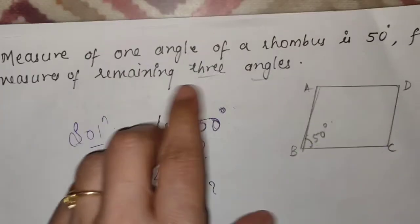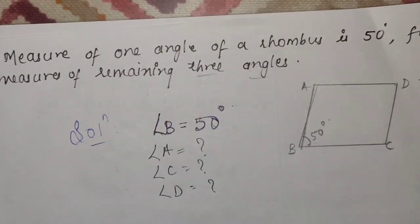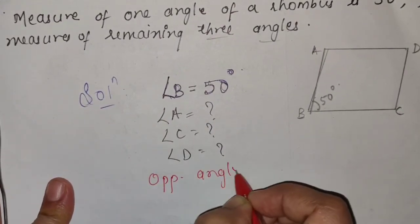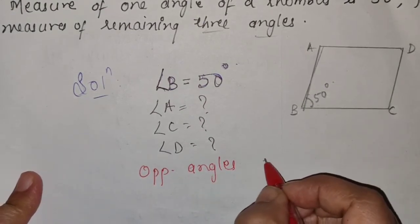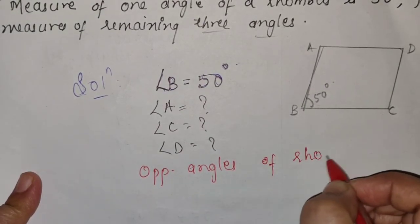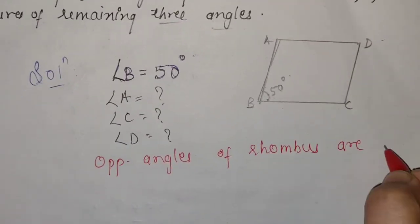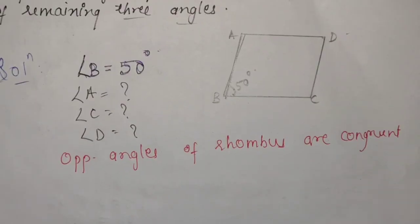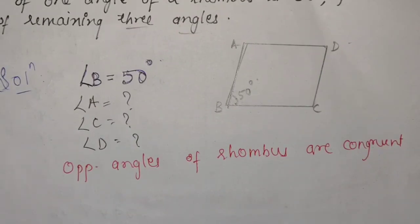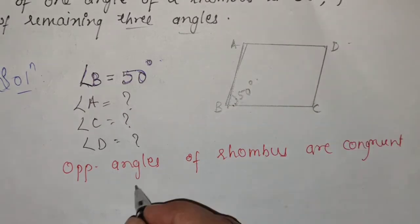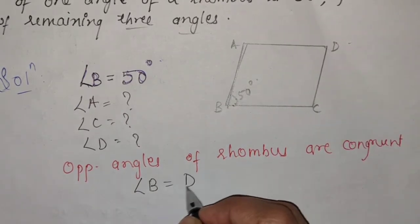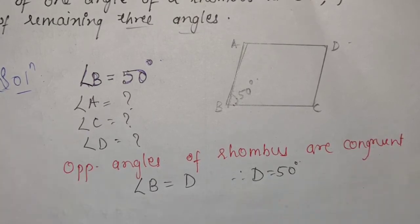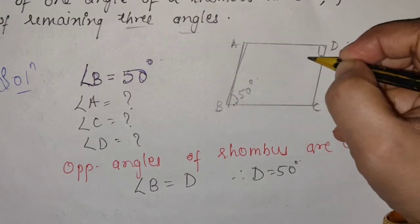Rhombus की property — opposite angles of a rhombus are congruent. Figure में opposite angle कौन सा है — angle B और angle D. Therefore angle D = angle B = 50 degree. So angle D is also 50 degrees.